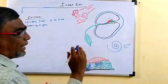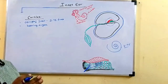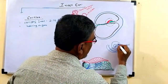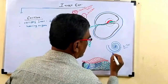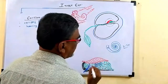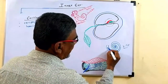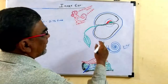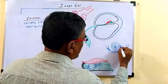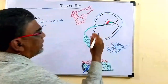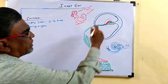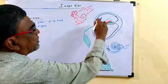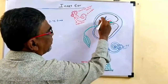This coil-like structure has three cavities or chambers inside throughout its length. To explain these three chambers, I will take a cross-section of a small portion of the Cochlea and enlarge it. You will see three chambers: one, two, three.